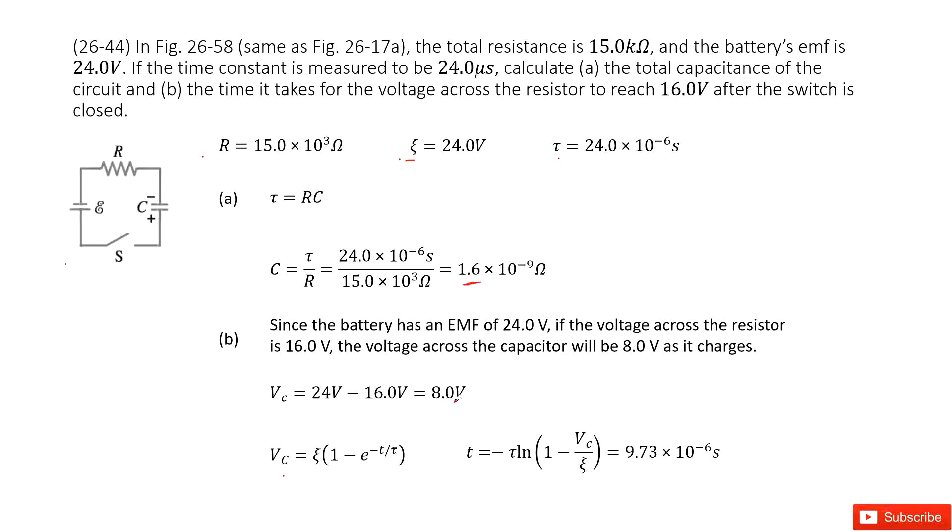Do you agree? Because we know the battery's voltage is 24V, and the voltage across the resistor is 16V. That makes the capacitor's voltage 8V.